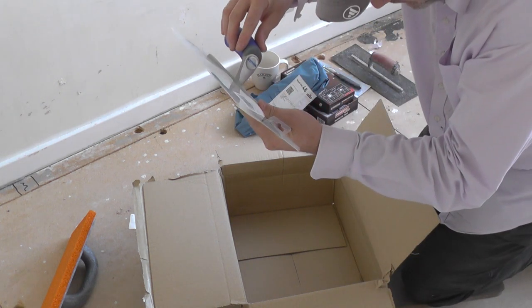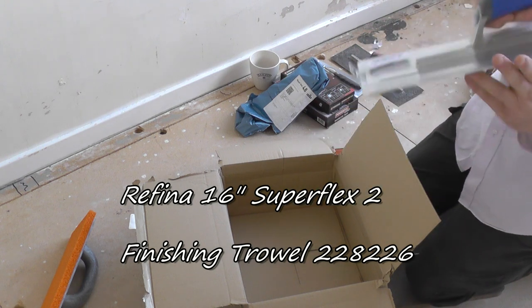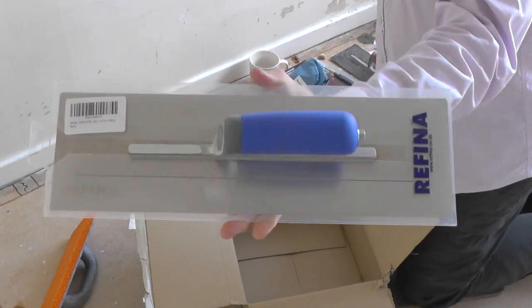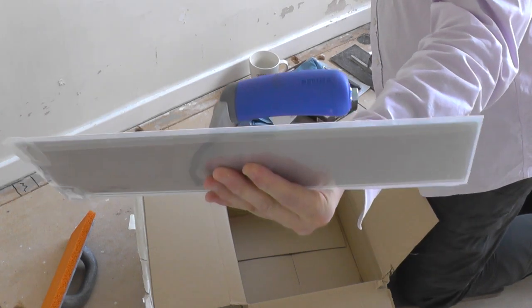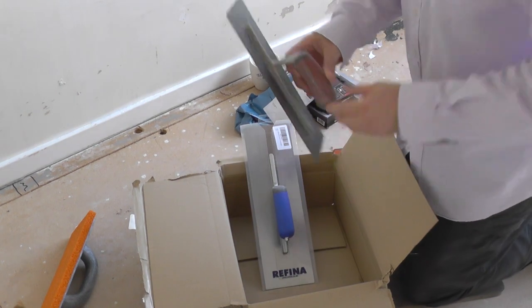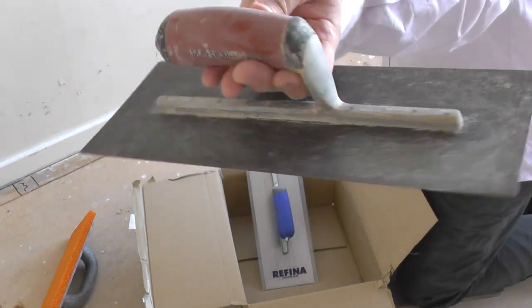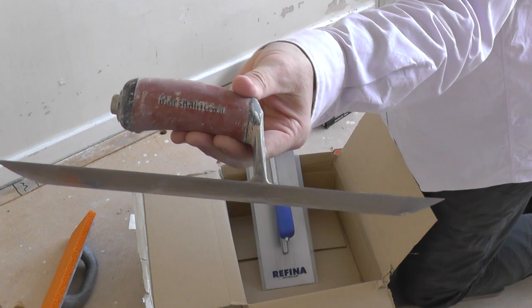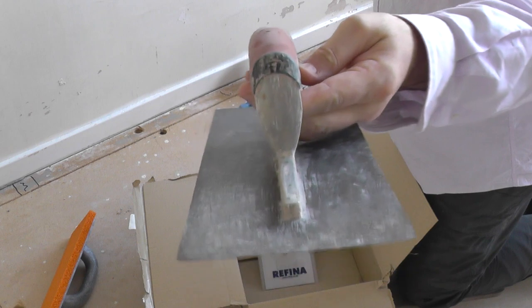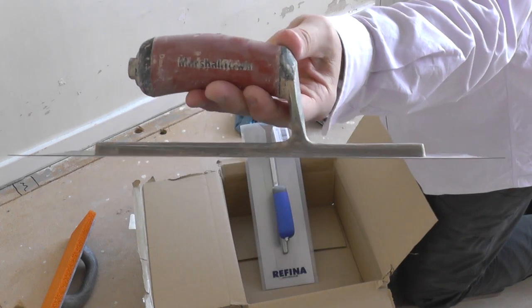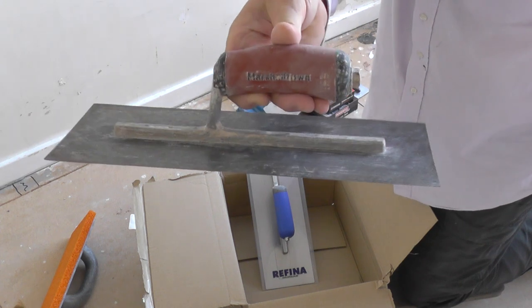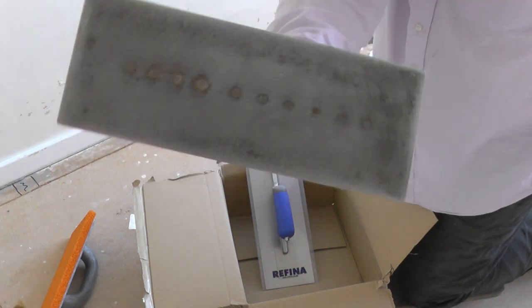So this is a Refina Super Flex 16 inch finishing trowel. That looks like the dogs, doesn't it? Now the trowel I have been using for many years on an amateur basis is a 13 inch carbon steel Marshalltown. I've had this for about 10 years and I've done loads of plastering, rendering, and skimming.